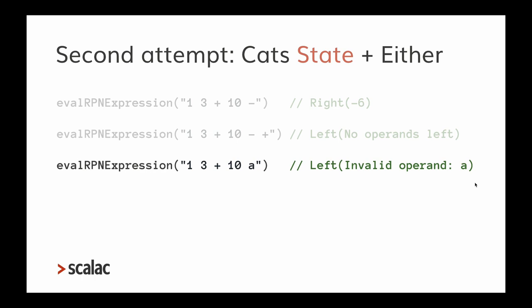The benefits of this second solution are that errors are handled appropriately. However, there is too much boilerplate to handle those errors, and poor type inference requiring manual type annotations.